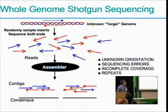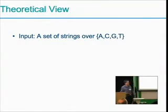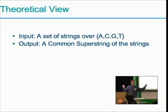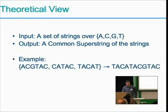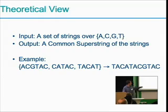We'll take a very theoretical view of sequence assembly. The theoretical view starts with definitions: the input is a set of strings over A, C, G, and T. The output is a common superstring of all of these strings — a string which includes all of the shorter strings. For example, given three strings, a valid superstring contains all of them as substrings.